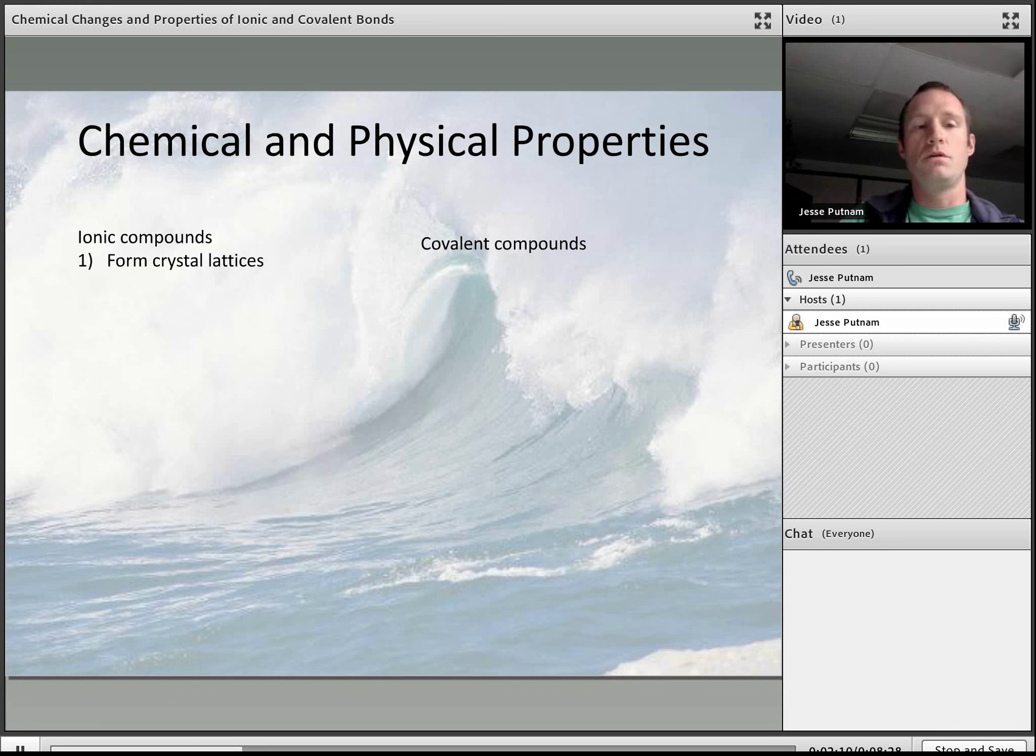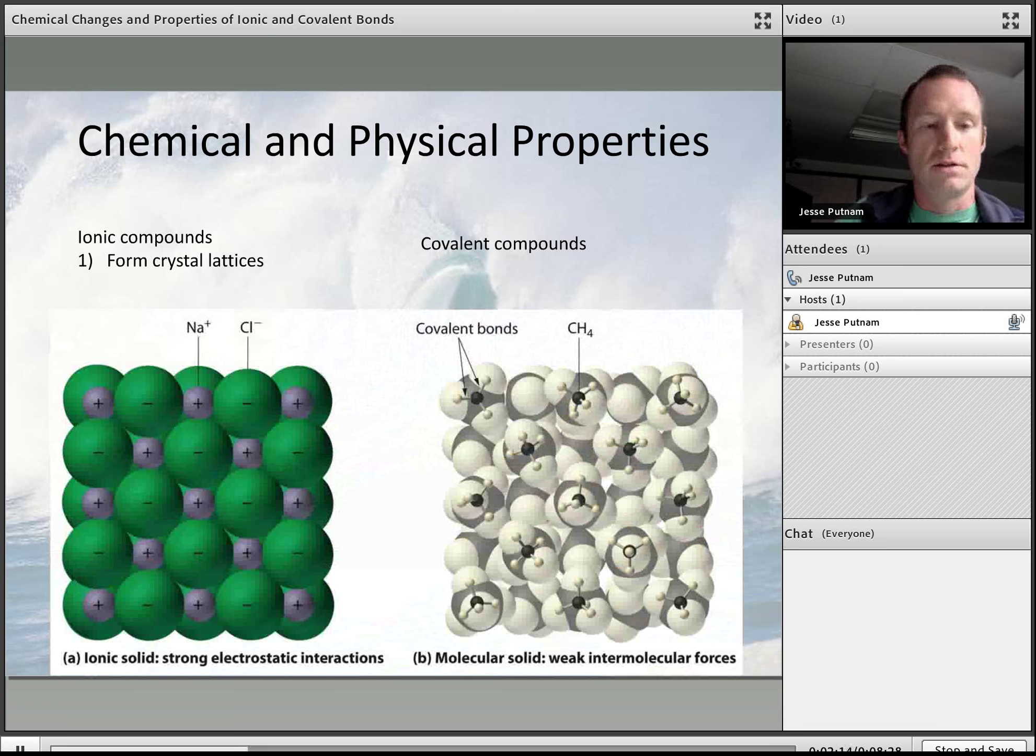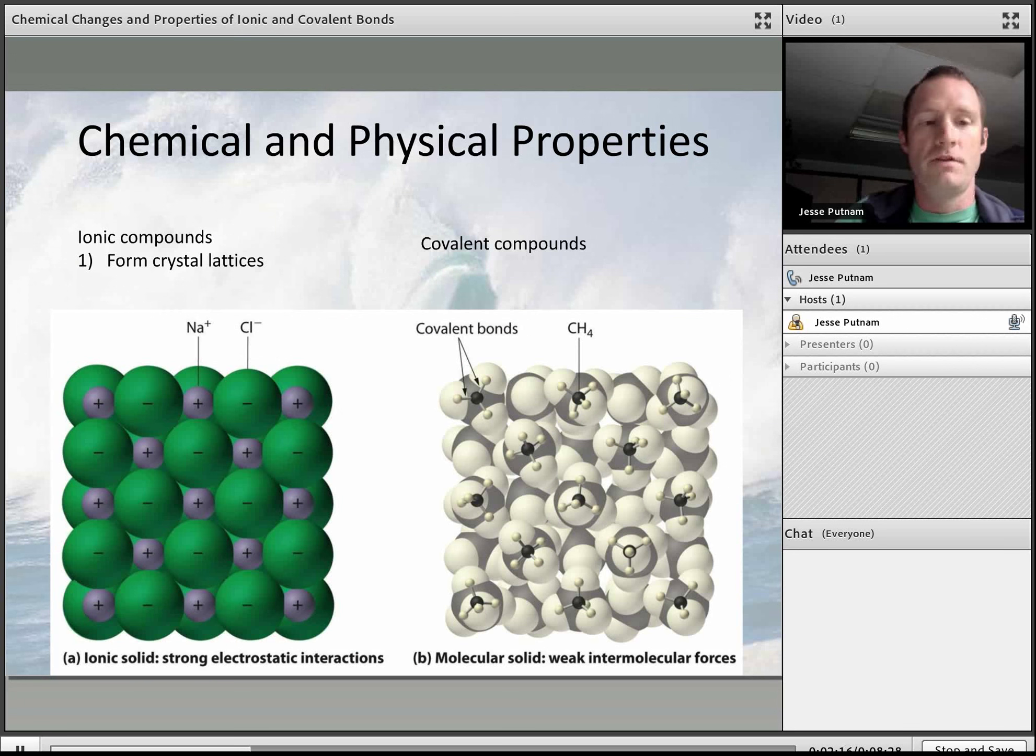First of all, we know that ionic compounds form crystal lattices, and that looks something like this where you have these ions, positive and negative. Usually the negative ions have ripped away the electron from the positive ion and are therefore more negatively charged. They form these lattice structures because that's the most likely way that positive and negative charges would get together.